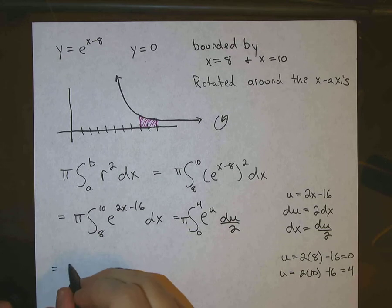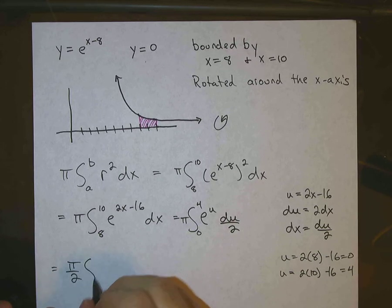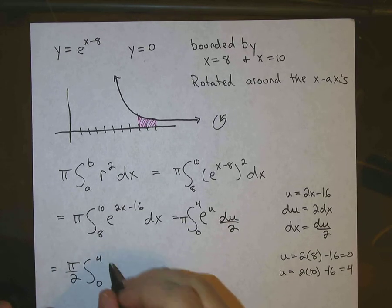Okay, so this becomes the integral pi over 2 from 0 to 4, e to the u, du.